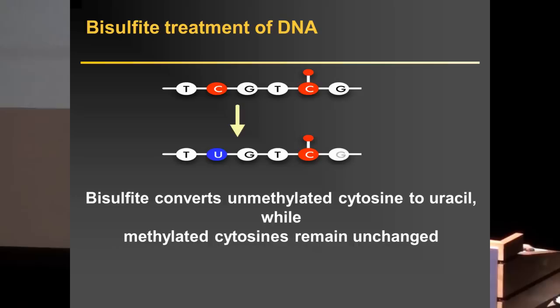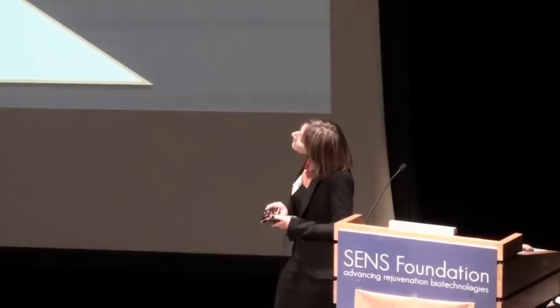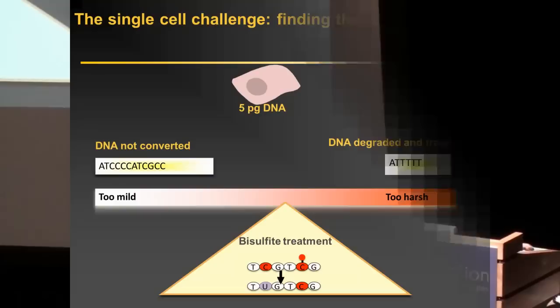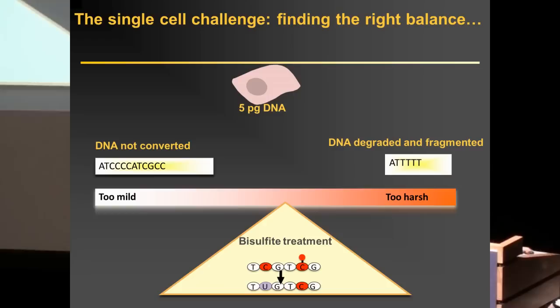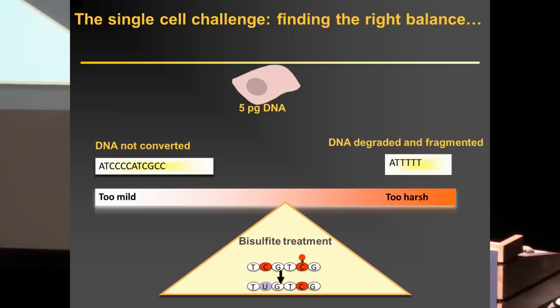One of the most common ways to study DNA methylation consists in treating DNA with bisulfite, which converts unmethylated cytosines while the methylated ones remain unchanged. Working with single cells — only 5 picograms of DNA — has been really challenging. The bisulfite treatment itself is very harsh and the DNA tends to be degraded after treatment. We have to find the right balance between having DNA not fully converted after too mild a treatment, which generates false positives, and having DNA too degraded if the bisulfite treatment is too harsh. We found the optimal conditions.